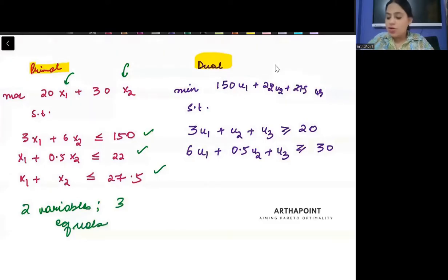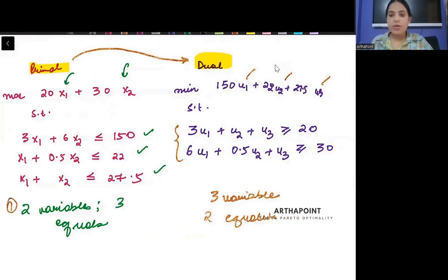So when you write the dual of this, it will change to three variables and two equations. It gets inverted. So you see three variables and two equations. That's the first thing that happened.